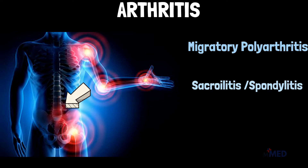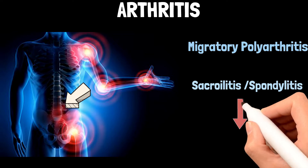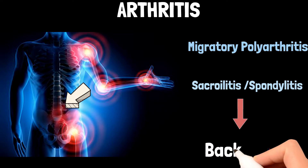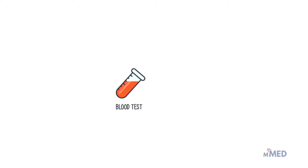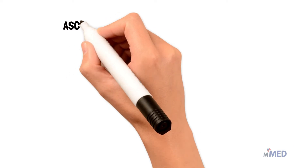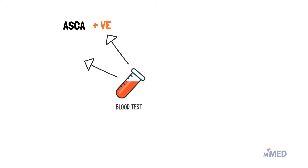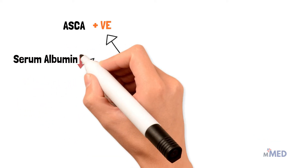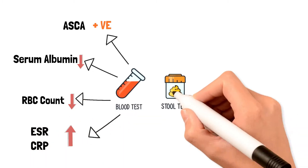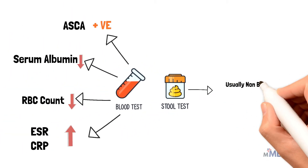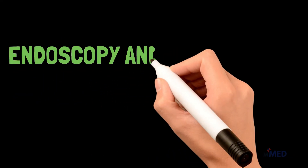The most common extra-intestinal manifestation of IBD is arthritis in large joints. When it affects multiple joints at once it's called migratory polyarthritis, and when arthritis affects the spine it's called sacroiliitis and spondylitis, which can result in severe back pain. During lab investigation in Crohn's disease, the blood test will be positive for ASCA, and we may see a low serum albumin level due to impaired digestion.